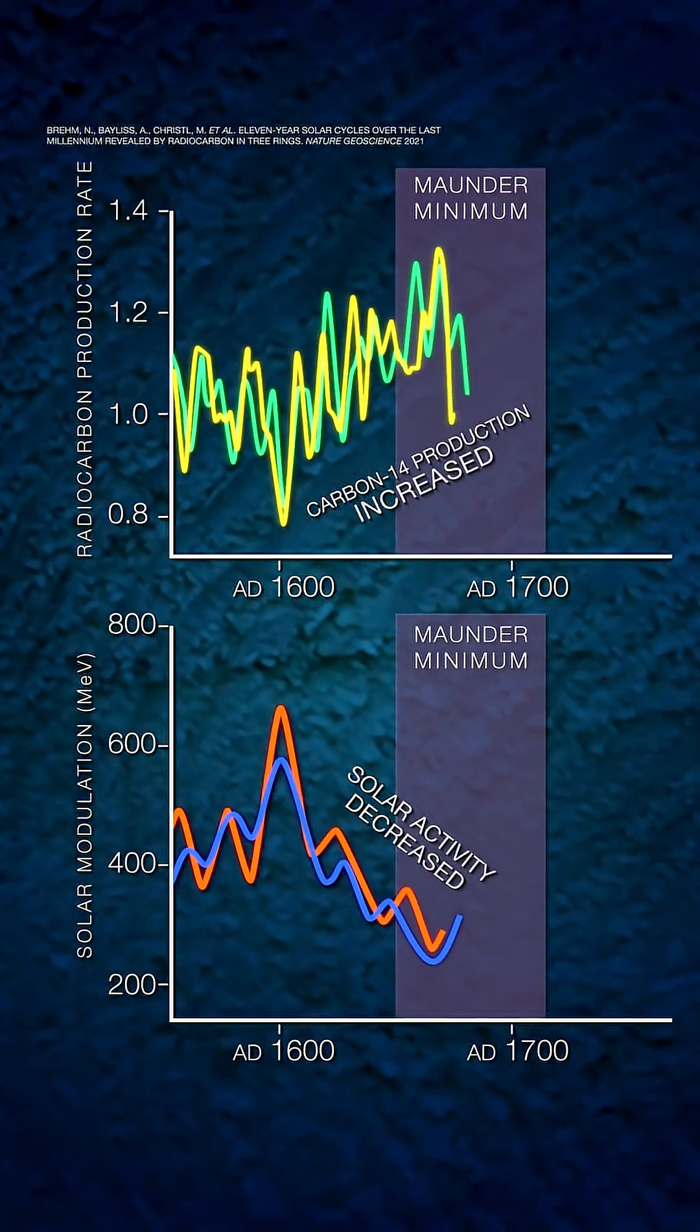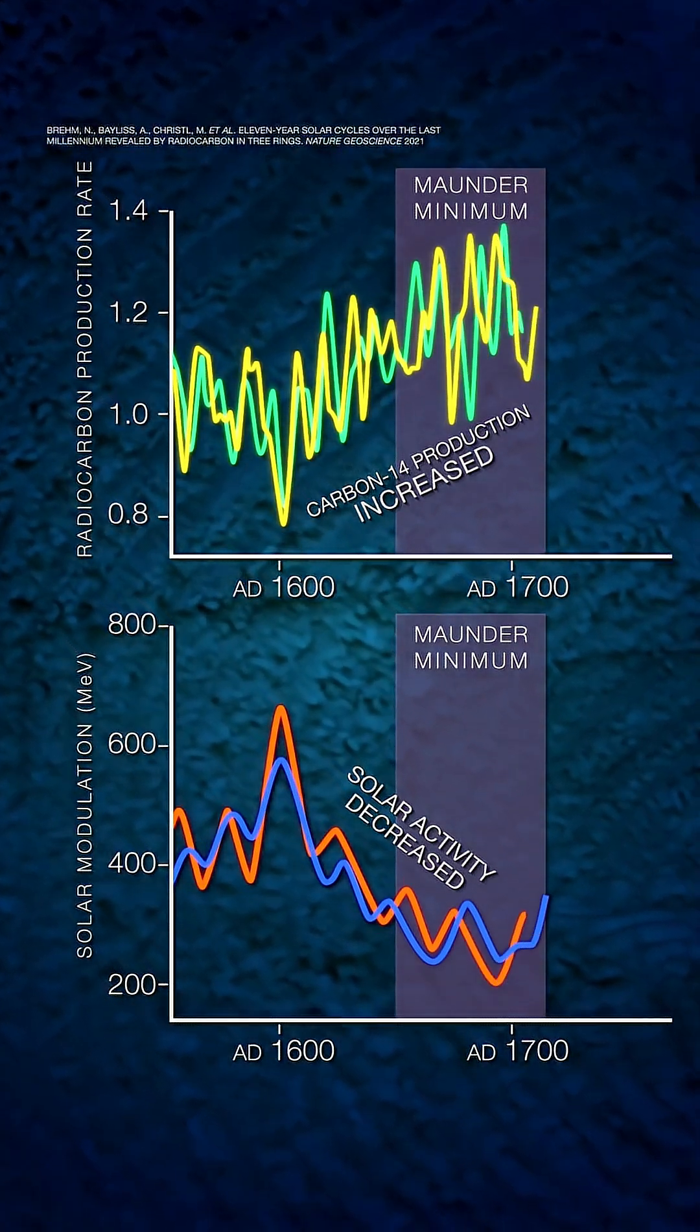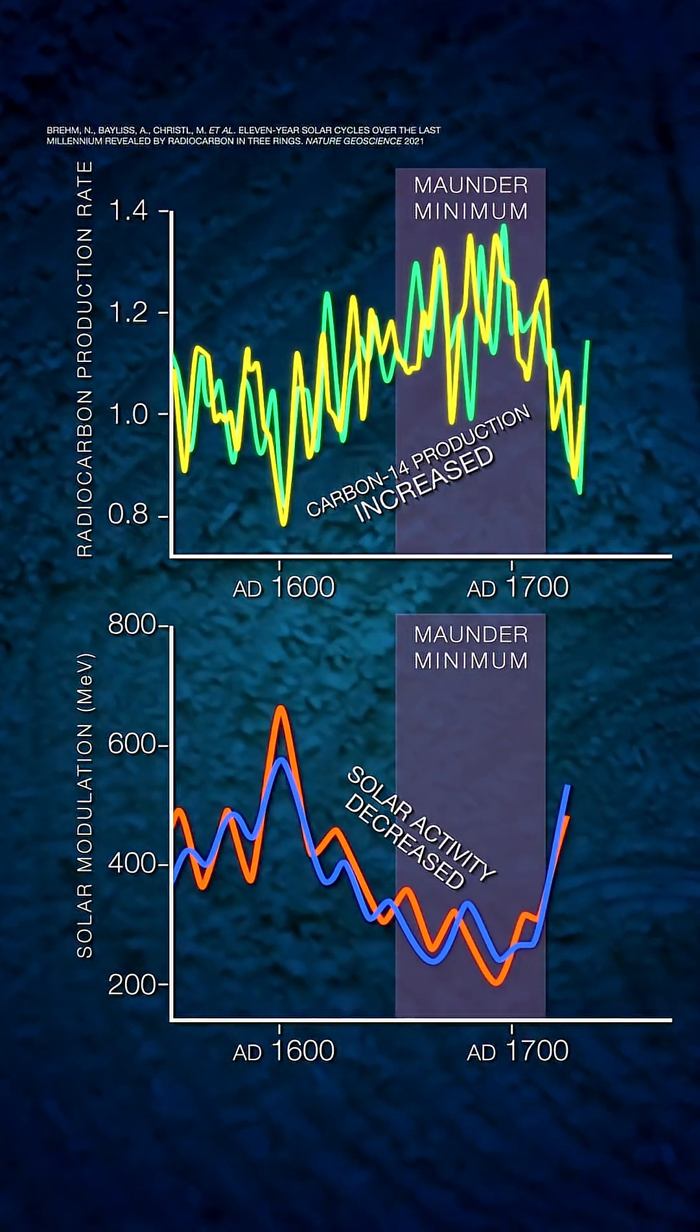Like during a 70-year period in the 1600s, when solar activity was unusually low and the heliosphere was weaker.